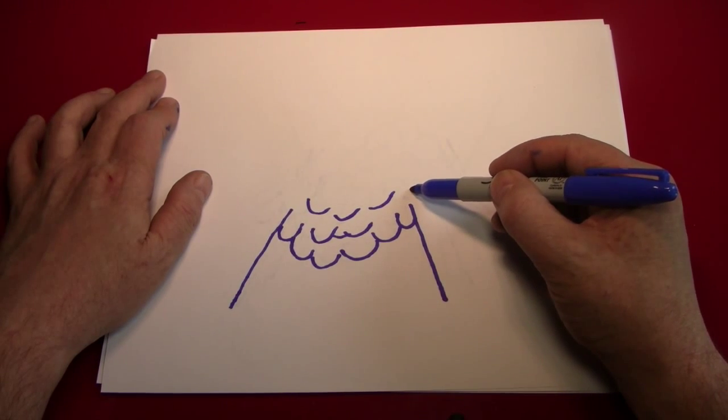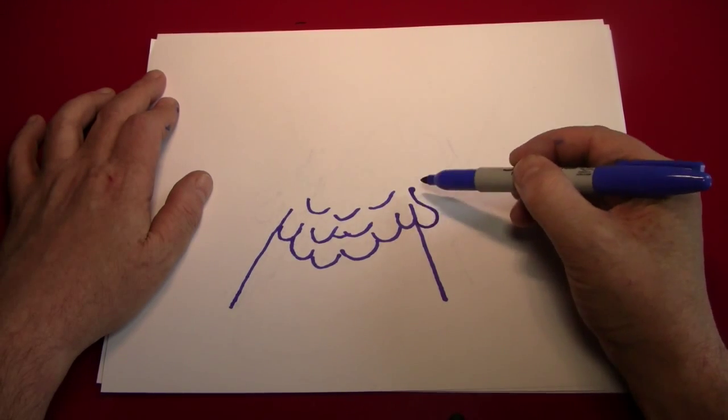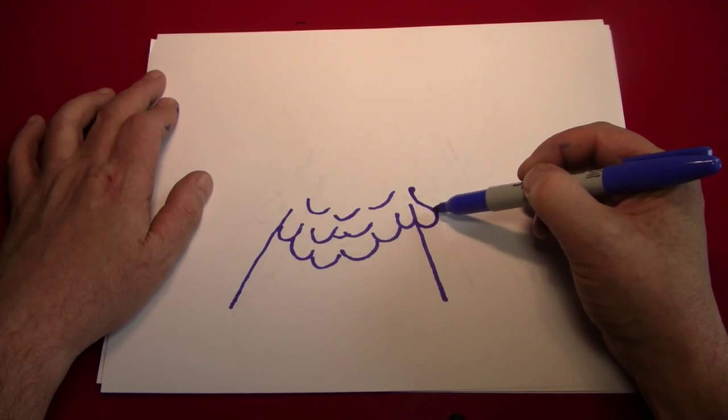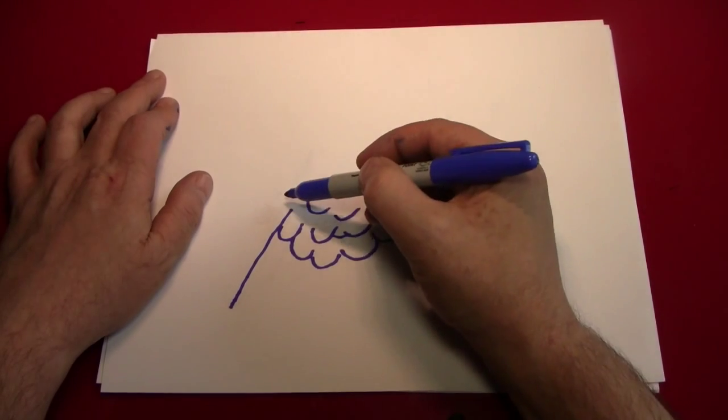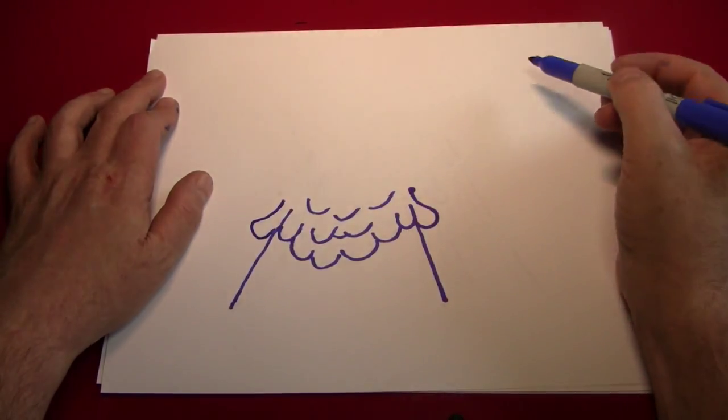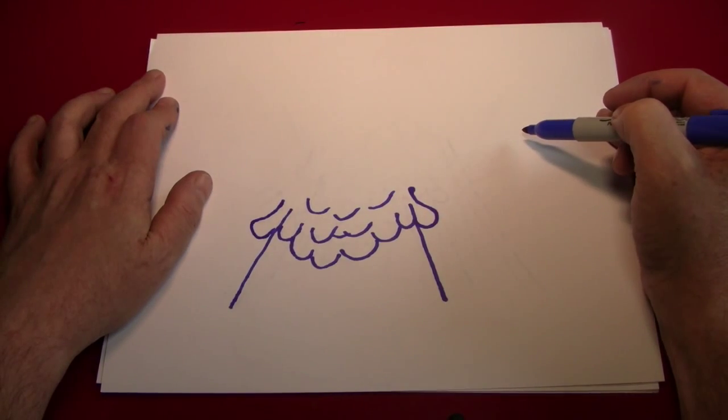Then we should put some lava on the side of the volcano. You can do that by making this shape. Sort of starting just a little bit above, coming out, back in, and up a little bit. Do that on both sides. And hey, we've got lava coming out of our volcano.